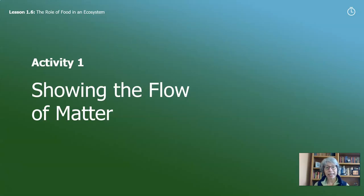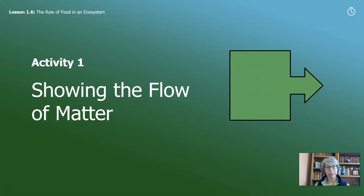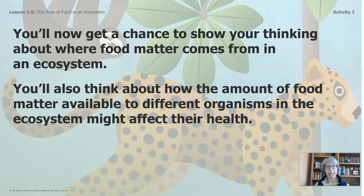There are three activities in this video. We'll start with the first one: showing the flow of matter. Remember what matter is? It's the stuff that things are made of — everything is made of matter. Now you'll get a chance to show your thinking about where food matter comes from in an ecosystem. You'll also think about how the amount of food matter available to different organisms in an ecosystem might affect their health.